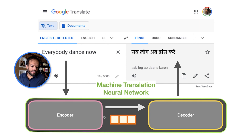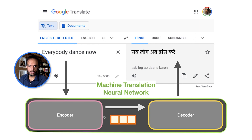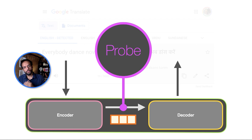So how do we get to understand this vector language — this representation, this series of numbers, or a matrix in later models? How can we get some glimpses into how these models, through their training, are arriving at a representation to communicate? Probes are tools that enable us to try to decipher some of the properties of the input and output, and whether they exist in this representation or not.